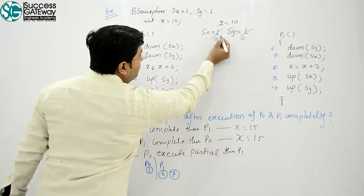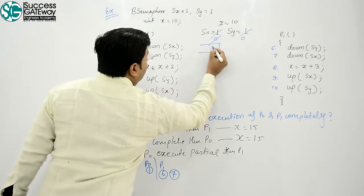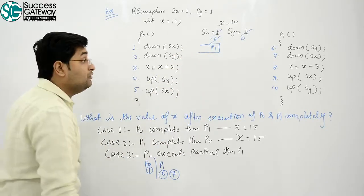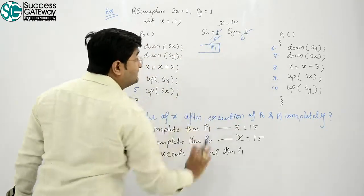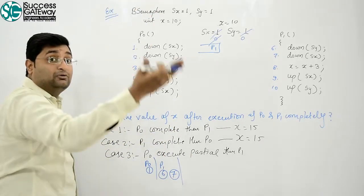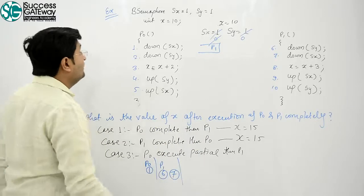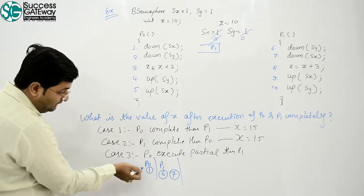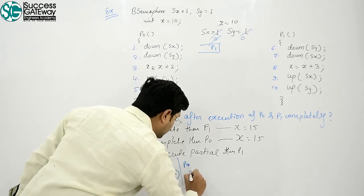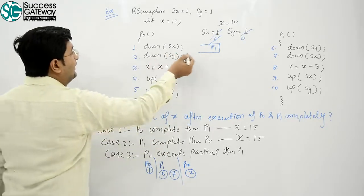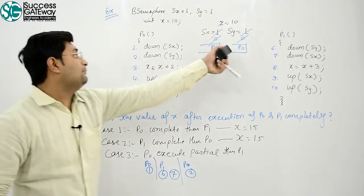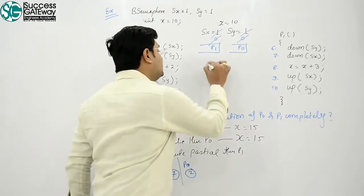Sx becomes 0, so P1 process gets blocked because Sx was already 0. When it tried to down it, it got blocked. What is P0's next statement? Statement 2. P0 will execute statement 2 which says down Sy. Down Sy from 0, P0 also gets blocked.